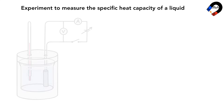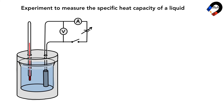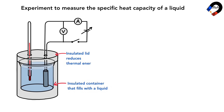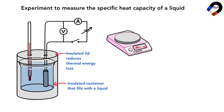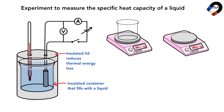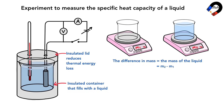For the experiment to measure the specific heat capacity of a liquid, we set up the apparatus as shown in the diagram. The apparatus uses an insulated container filled with the liquid, and there is an insulated lid to reduce thermal energy loss to the surroundings. The mass of the liquid is measured by weighing the empty insulated container and then weighing the container with the liquid — the difference in mass is the mass of the liquid.